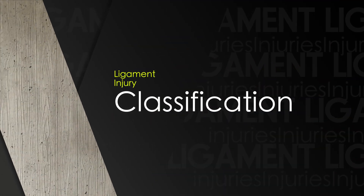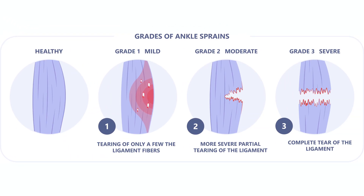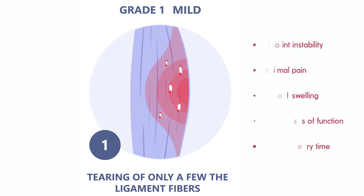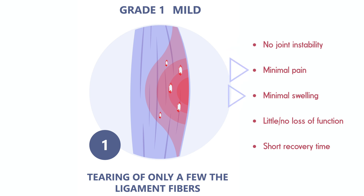Classifying ligament injuries helps us to define their severity, to map out appropriate treatment strategies, and to predict prognosis. Clinically, ligament injuries are generally classified into grades based on the extent of damage to the ligament and the amount of joint instability it causes. Grade 1, or mild ligament injuries, happen when the ligament is stretched but not torn. The joint remains stable, and the athlete typically experiences minimal pain and swelling, with little to no loss of function. The healing time is usually short, and the athlete can often return to sport with minimal intervention.